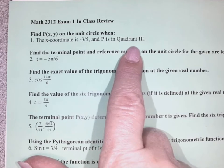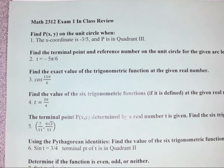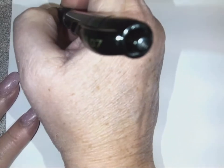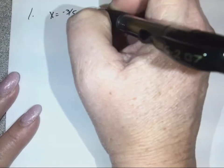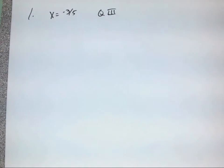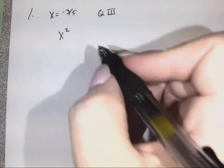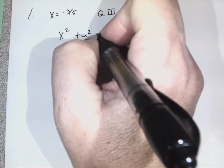Remember, we need to know the quadrants — we know the sign of it, like the positive or negative, not the sine as in cosine. For number 1, we are given that our X is equal to negative 3 fifths, and we are in quadrant 3. We're going to use the equation we were told. It's on the unit circle, so we can use that equation.